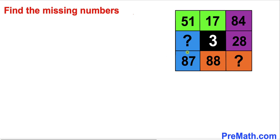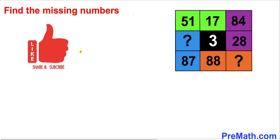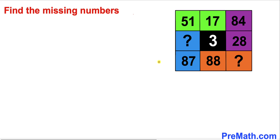Welcome to pre-math! In this video we have got a table with four different colors: green, purple, blue, and orange. We are going to find the missing numbers. Please don't forget to give a thumbs up and subscribe. Let's go ahead and get started. Now let's focus on these green boxes.